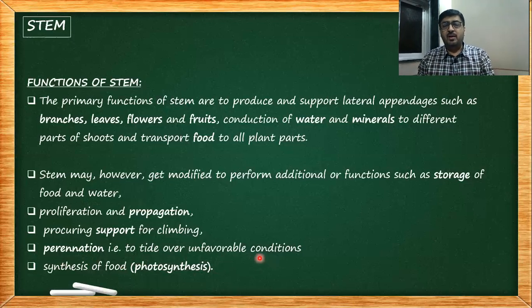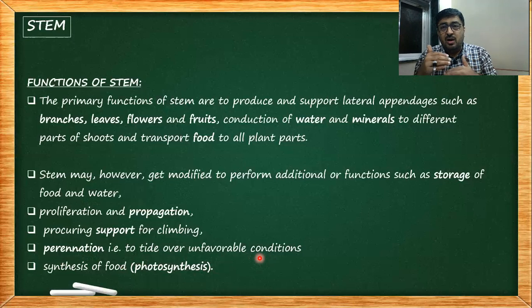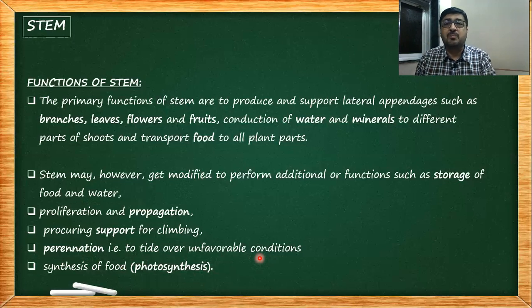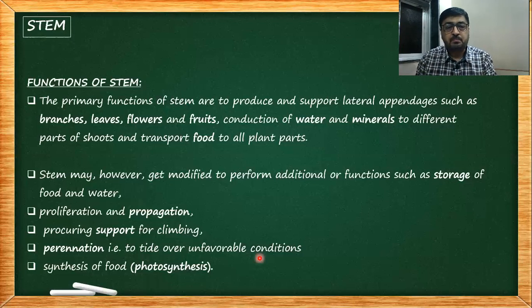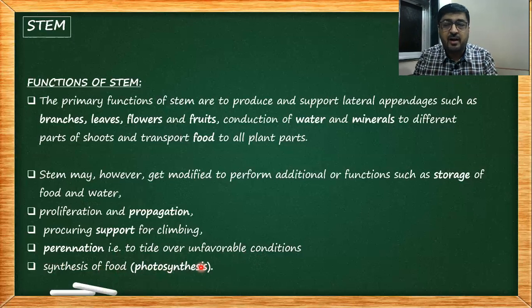This property of remaining dormant until conditions become favorable is called perination, and it is shown by underground stems — we will talk about it in the next video. Lastly, synthesis of food: photosynthesis is not normally the function of a mature stem, which is brown, but the young stem is green. If the need arises, the stem can be modified to perform photosynthesis as well.